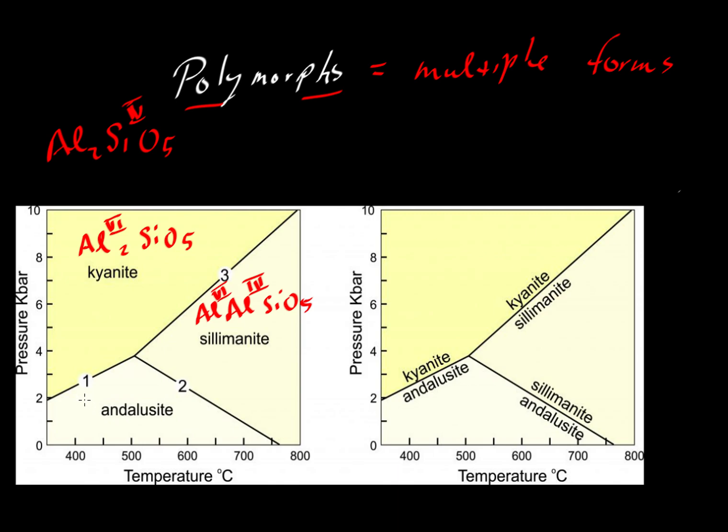With andalusite, same kind of issue. We have aluminum in sixfold coordination and another aluminum in fivefold coordination, then silica O5. They all have the formula Al2SiO5, but the aluminum is occupying different sites or different kinds of sites.